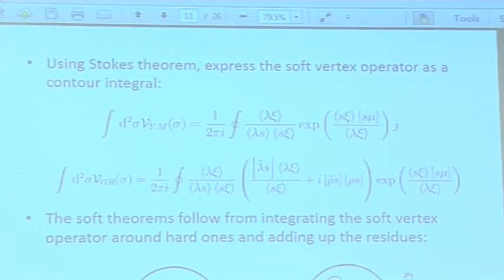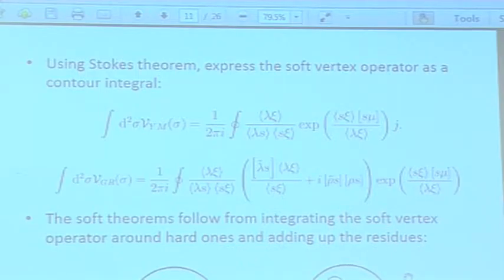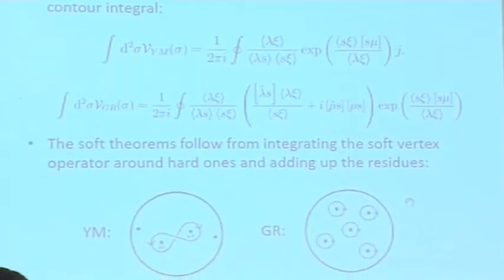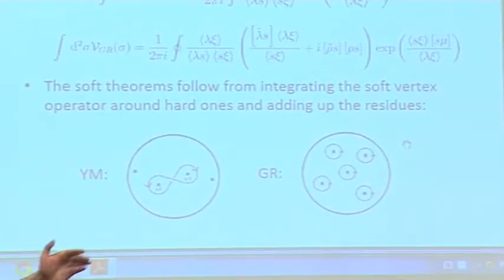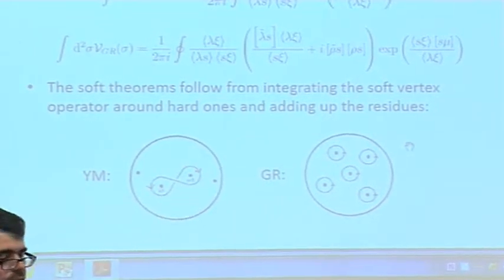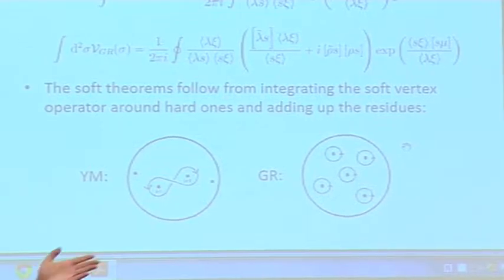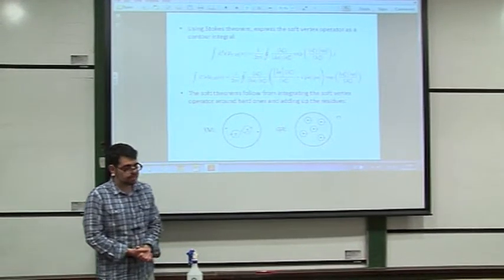In GR, once you've written your soft vertex operator as a contour integral, you integrate it around each of the vertex operators corresponding to a hard particle, compute the OPE, compute the residue associated with each of these integrals, and add up the residues. Each term in the residues corresponds to each term in the sum over hard particles that appeared in the expressions for the soft theorems. For a color-ordered Yang-Mills amplitude, if particle I is going soft, you simply integrate the soft vertex operator around the locations of the two adjacent hard vertex operators, and in a very elementary way — just a simple residue calculation — you immediately obtain the soft theorems.